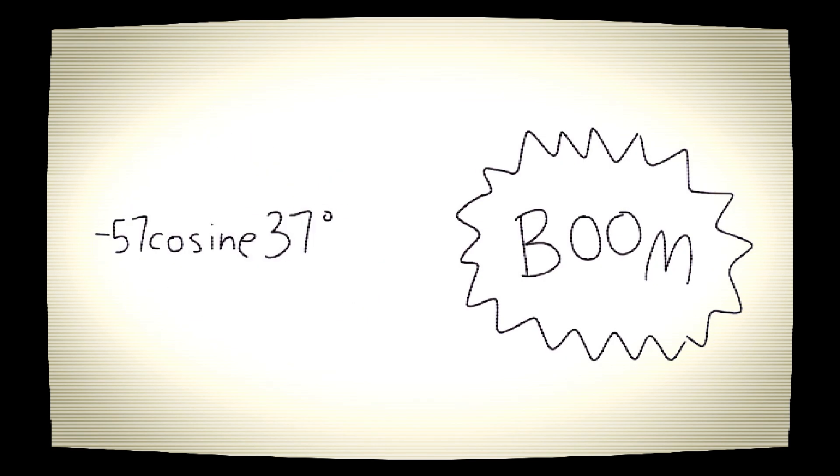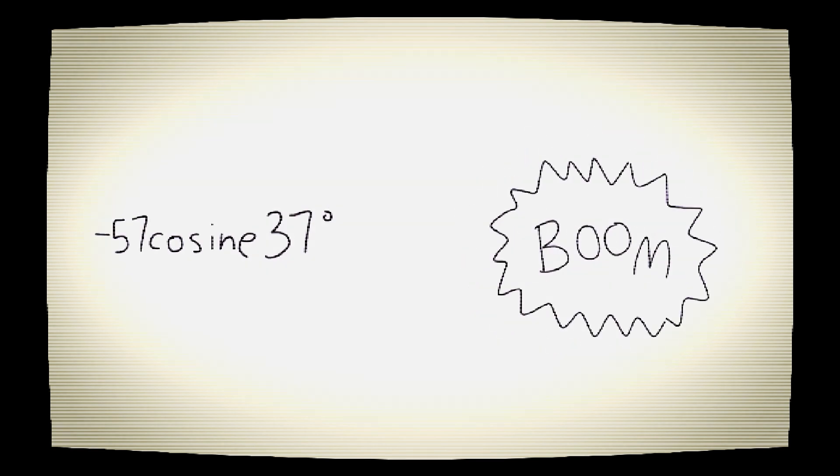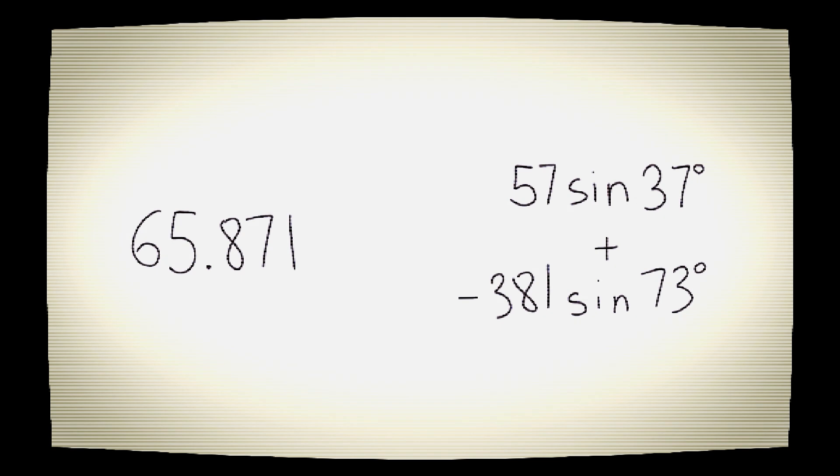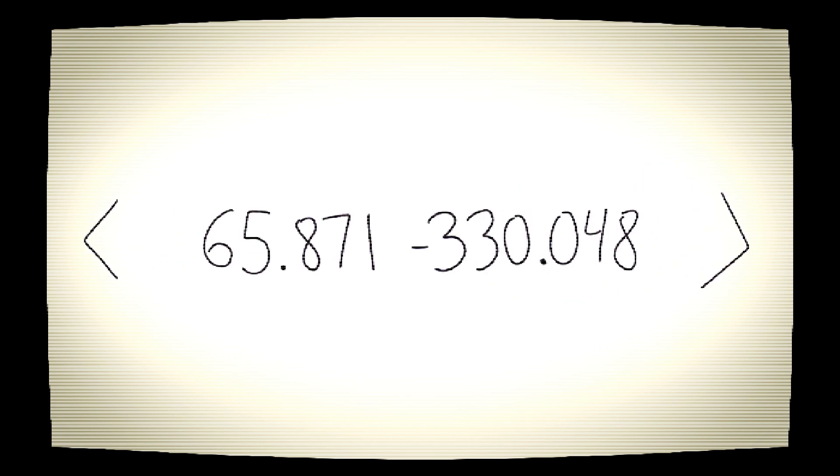It's the same thing with the wind, giving us negative 57 cosine 37, 57 sine 37. Do all these calculations, that gives us our ground speed vector: 65.871, negative 330.048. Now we got legs here, this triangle can walk now.